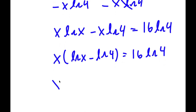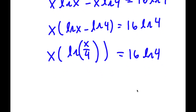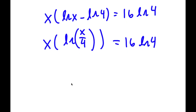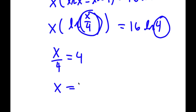Now ln x minus ln 4 is simply equal to ln of x over 4. So I have x times ln of x over 4 is equal to 16 times ln 4. This is essentially saying that x over 4 is equal to 4, meaning x is equal to 16.